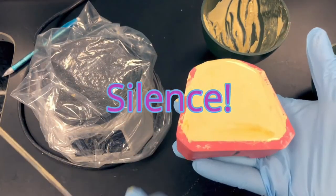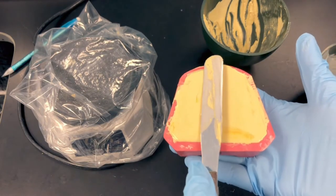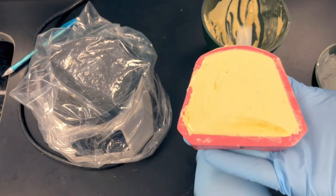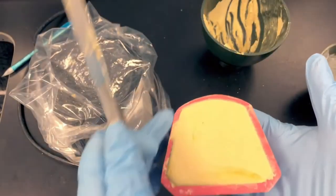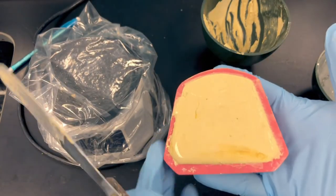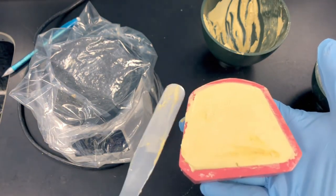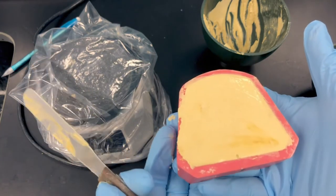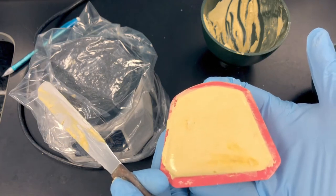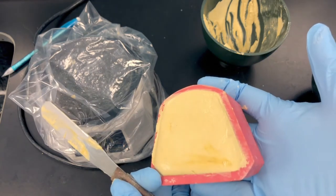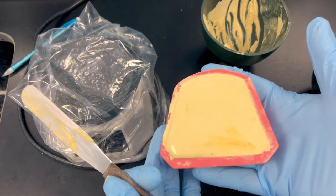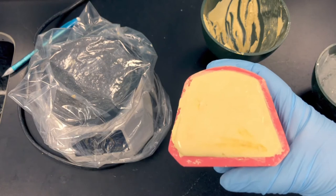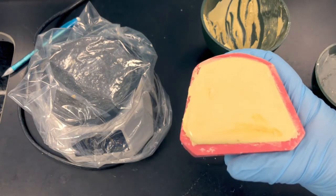This is similar to a box and pour method. If you have an impression and you choose to use some boxing wax to create a border around the impression to contain the stone, you're effectively pouring up the anatomic portion, the teeth and tissue, and the base portion at the same time. This will take about 45 minutes to set up, so I'll set this off to the side and I'll make a new mix for the other arch.